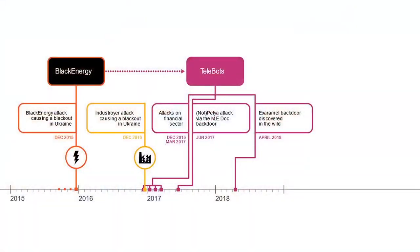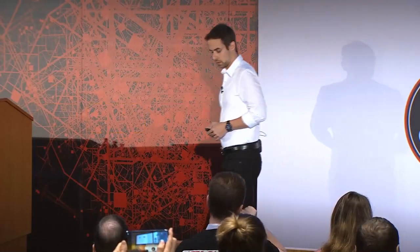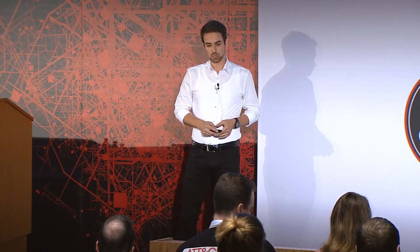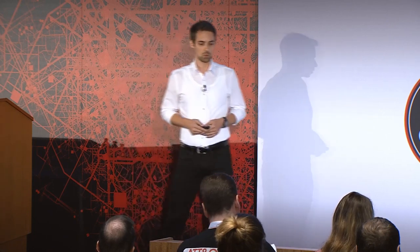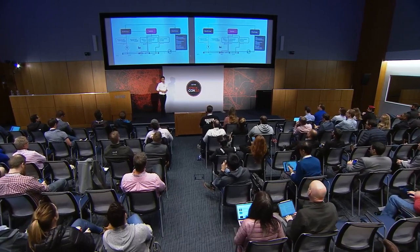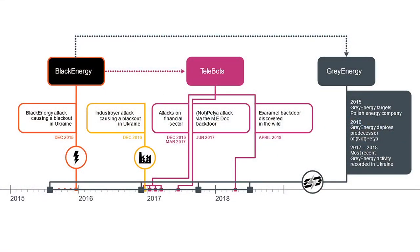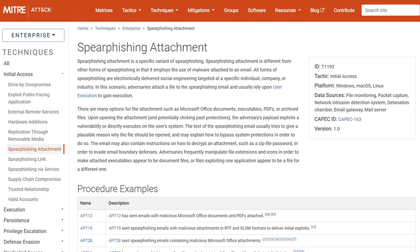We also saw a shift from BlackEnergy to what we call TeleBots. There were a lot of things in common, like shared infrastructure, but the malware was different. The reason we called it that was because they were using the Telegram API for command and control communication. Not only did the tools change, but also the focus — so it's really hard to conclusively say they are exactly the same group. The focus shifted from critical infrastructure and the energy sector towards the financial sector, with their most famous attack being NotPetya, which spread beyond Ukraine worldwide. In parallel, there was also GrayEnergy, which we consider the successor of BlackEnergy, staying focused on critical infrastructure and energy companies, and still active until today.